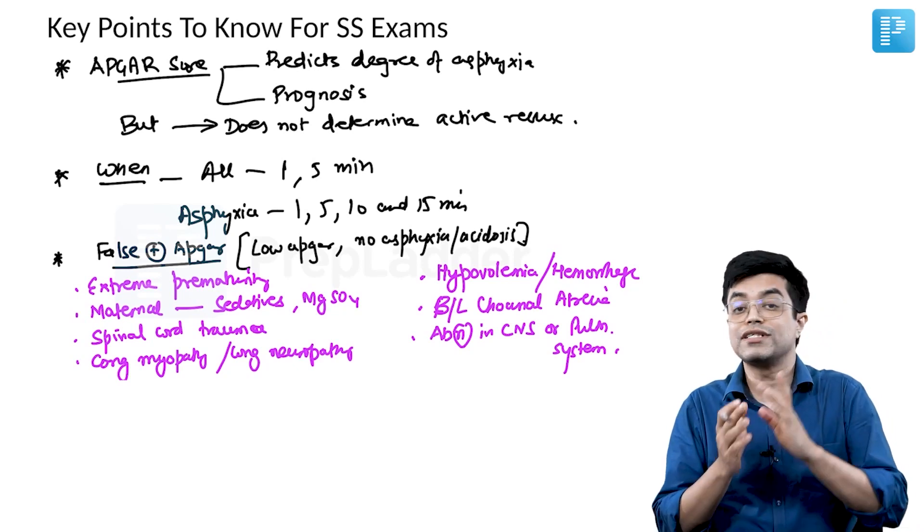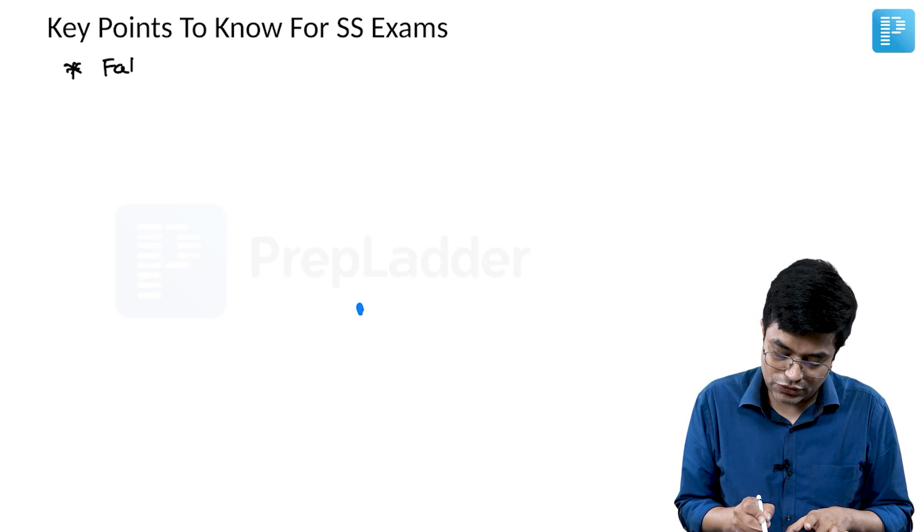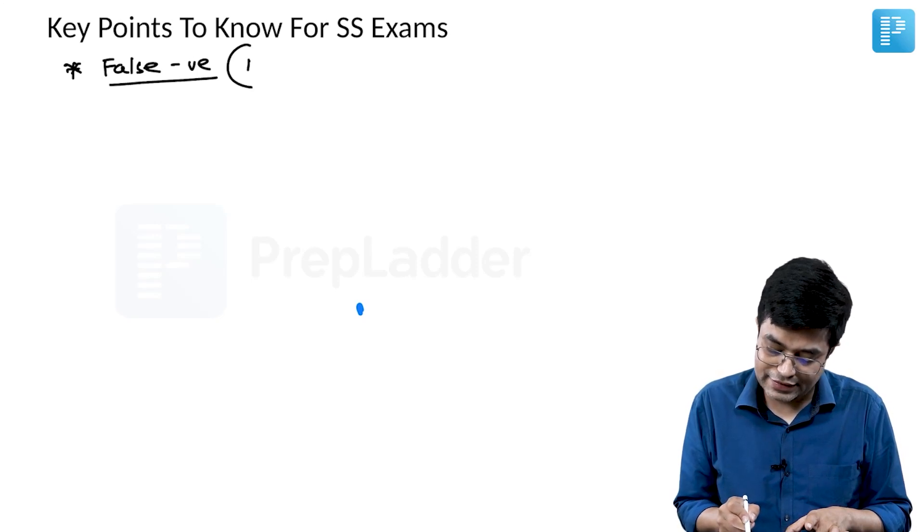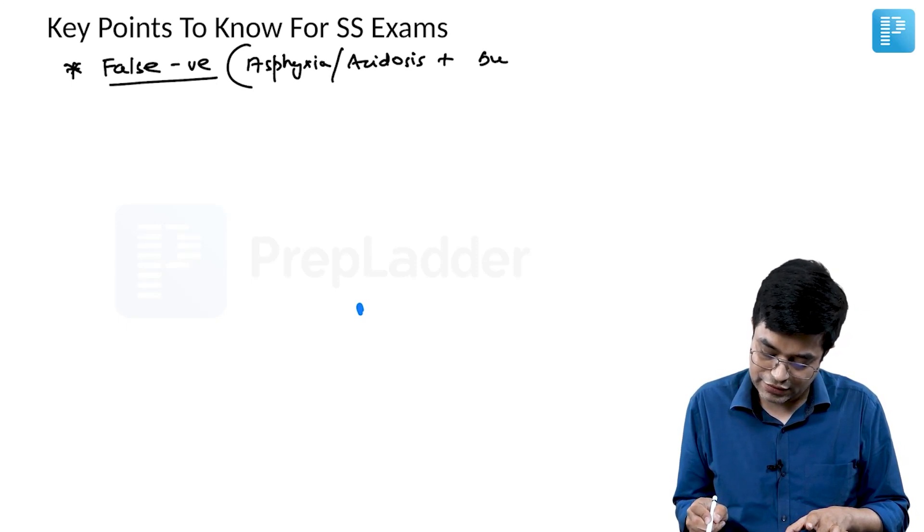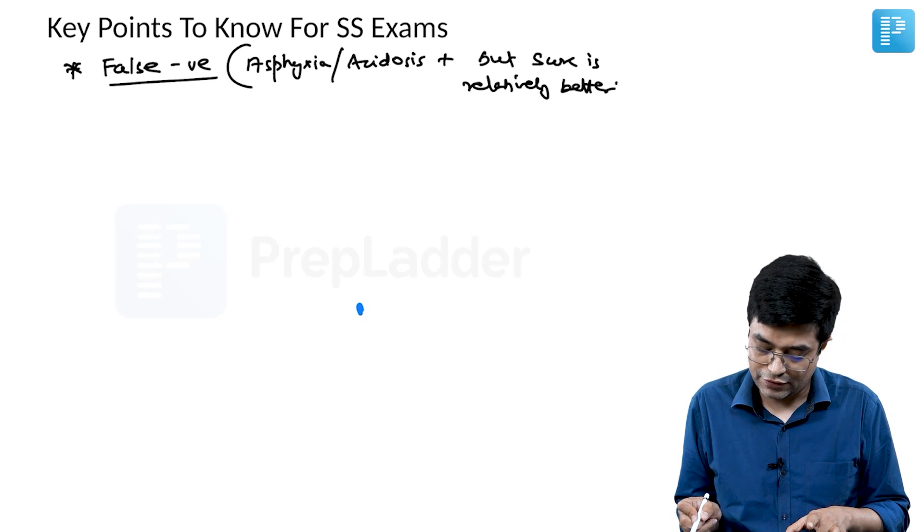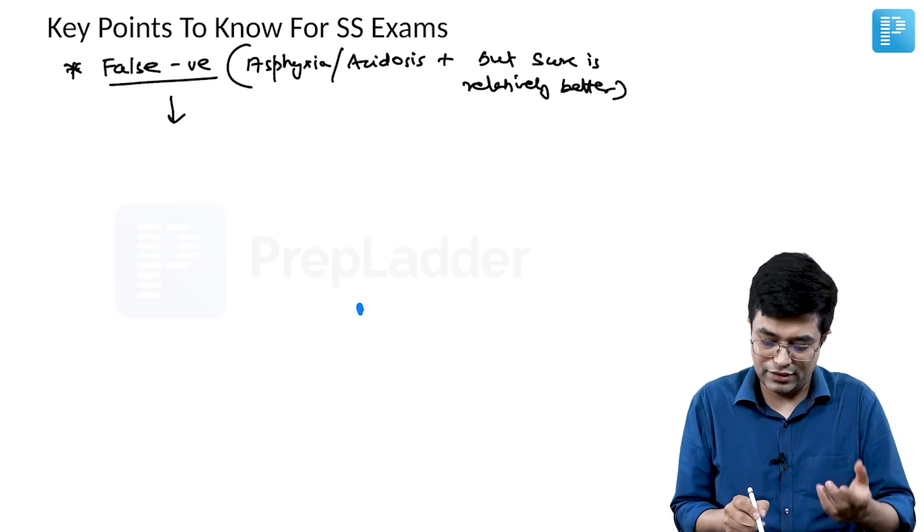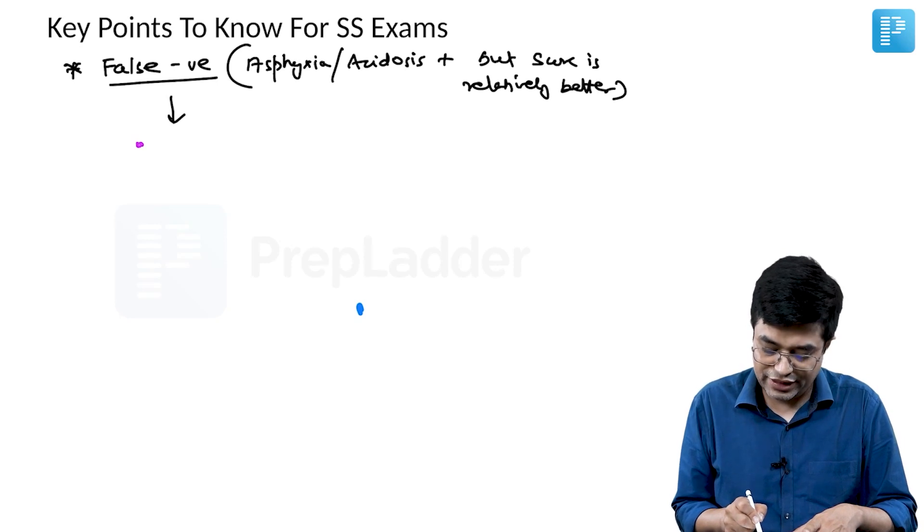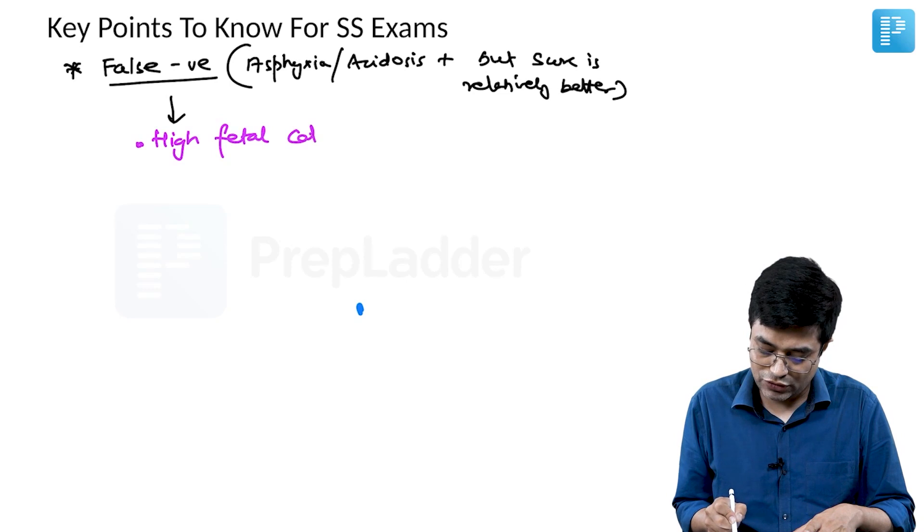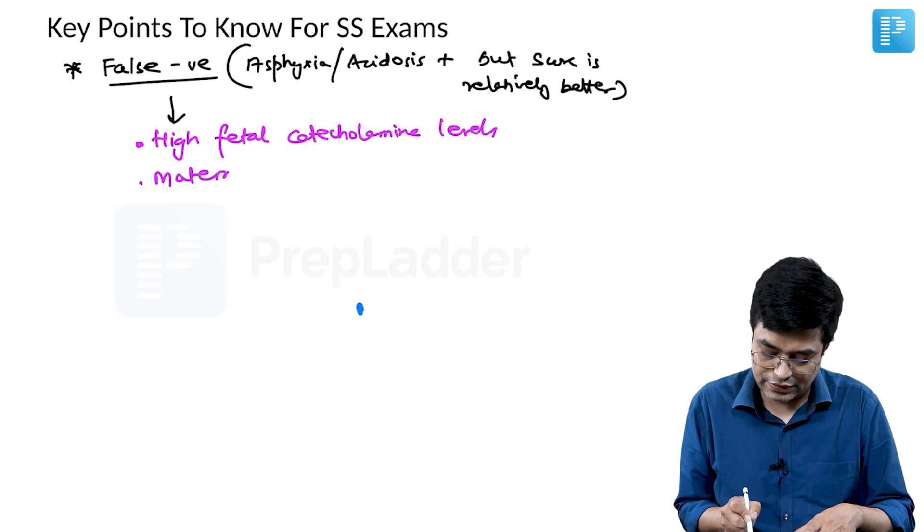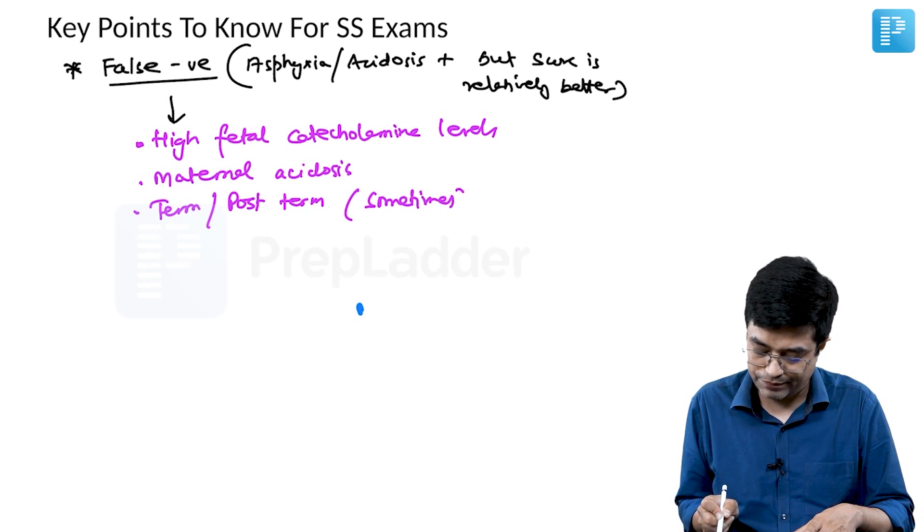Last but not the least, false negative APGAR score. What is false negative APGAR score? False negative will mean there is asphyxia or acidosis present, but the score is relatively better. What are the conditions? The common conditions, it has a very less list. First of all, if the patient is having high fetal catecholamine levels. Secondly, if the mother is having acidosis. And thirdly, some term or post-term infants sometimes can have a false negative APGAR score.